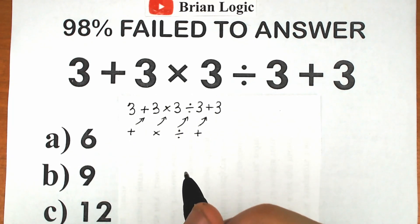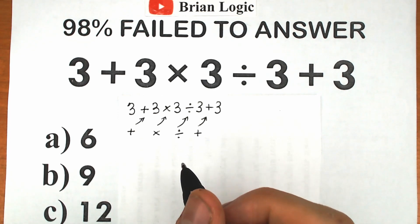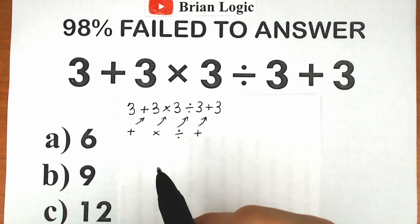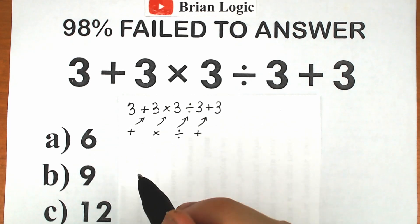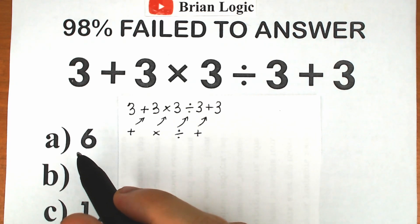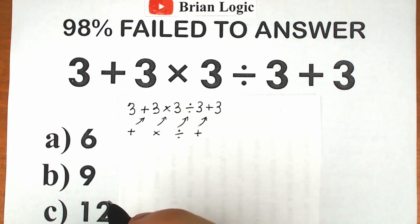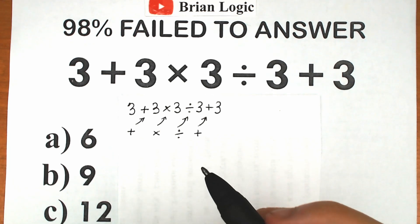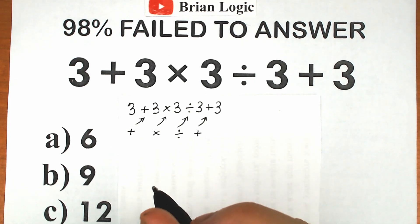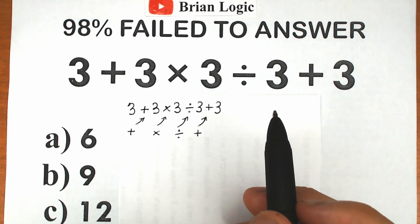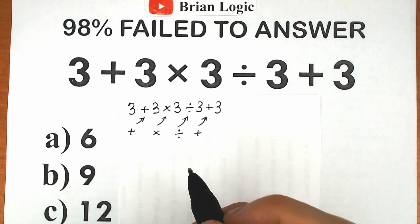The main thing is: whatever order of operation we select is going to create a different answer. So we need to understand what is the correct order to do this problem. We can't solve this challenge randomly, because if we start with multiplication we get one answer, and if we start with division we get a completely different answer. In terms of math, it's really bad to get two different answers from one question.